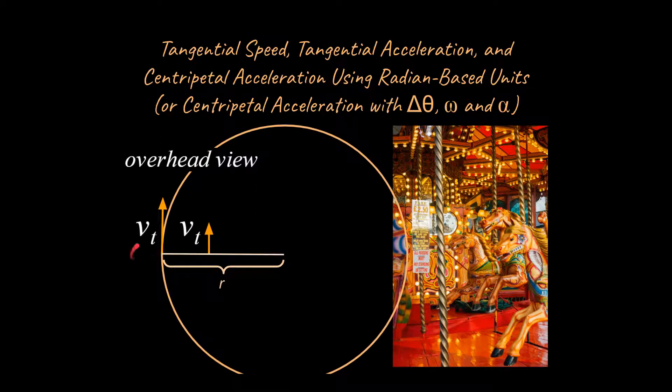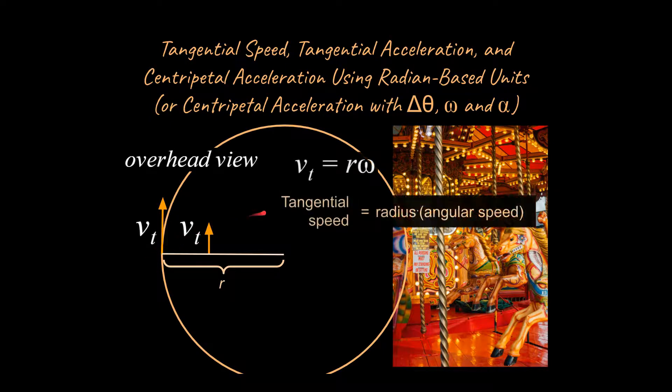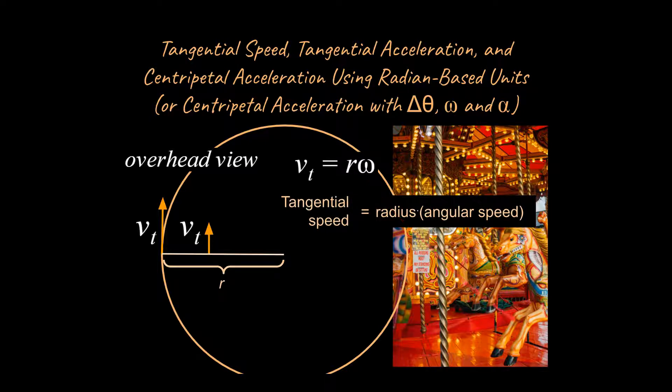I do want to talk about this. Just an overhead view of what we're talking about. This is tangential speed here. So we're going to say that tangential speed is equal to the radius times the angular speed. And this is what I was talking about a moment ago where the radius changes the tangential speed, but also the angular speed matters.